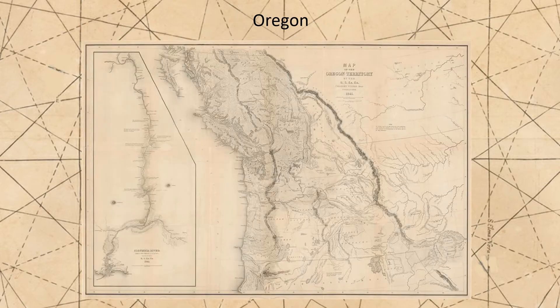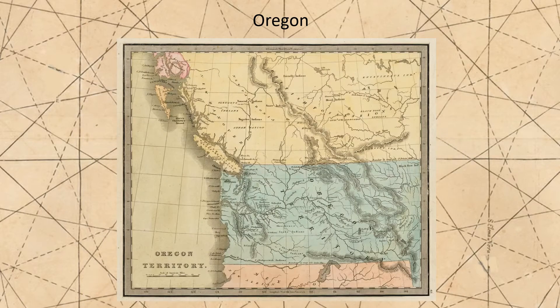At about the same time immigrants were moving into the Iowa Territory, more far-sighted immigrants were heading much further west, out to Oregon country. American settlers began to arrive there in the late 1830s along the Oregon Trail, culminating in the Great Migration of 1843. By the 1846 Oregon Treaty with Great Britain, the lands west of the Continental Divide between the 42nd and 49th Parallels officially became part of the United States. This was initially unorganized territory, but two years later, in 1848, it was officially established as the Oregon Territory.